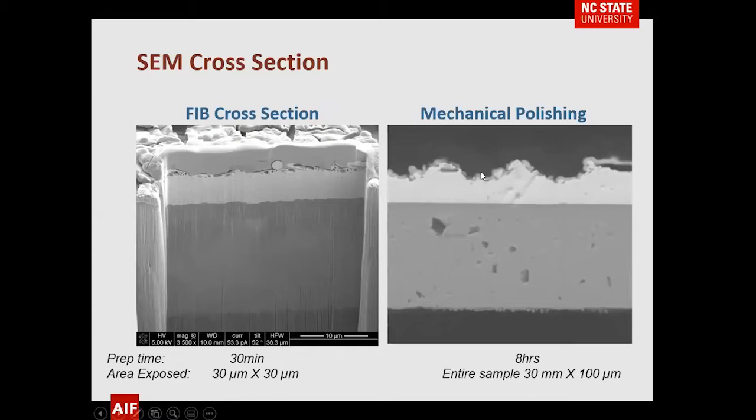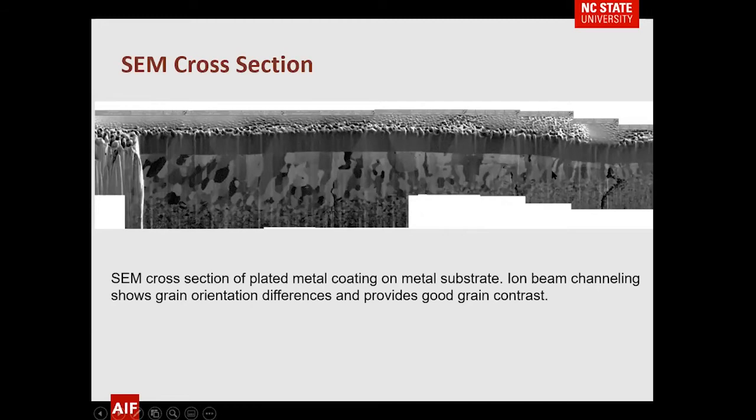If you're doing mechanical polishing, here's a comparison between mechanical and FIB polishing. Here's our protective layer. We're looking at an area and we're not going to damage it the way you would with mechanical polish. But bear in mind: that's a 30 by 30 micrometer region, whereas the mechanical polish image is 30 millimeters by 100 micrometers. The FIB image is actually put together from several different cuts.